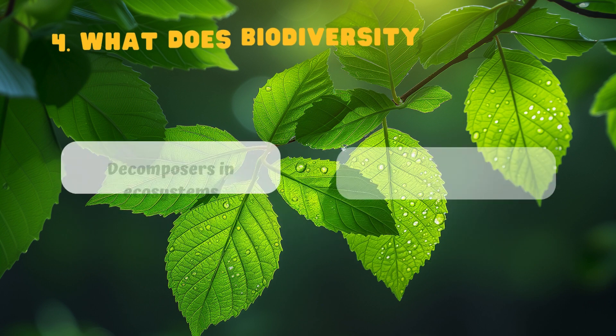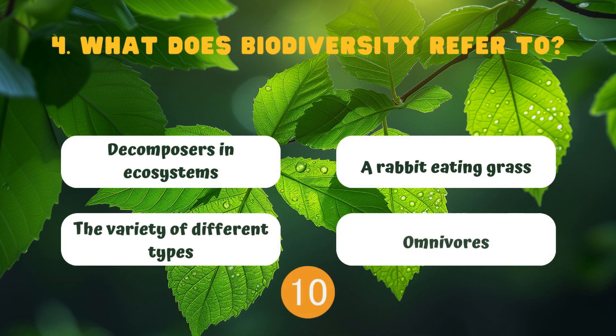What does biodiversity refer to? Decomposers in ecosystems. A rabbit eating grass. The variety of different types. Omnivores.